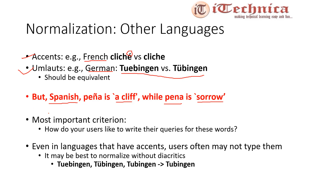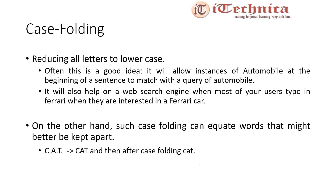Our most important criterion to perform normalization is to focus on how users like to write their queries. If we follow French, German, or English language forms that contain accents or umlauts, users may not like to type queries with those accents — they would prefer to write queries in simple English. It may be best to normalize without diacritics. For example, tokens 'Tübingen' with an umlaut and 'Tubingen' without 'e' would all map to the single normalized term 'Tubingen' without the umlaut, to generate the best possible results.